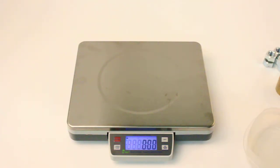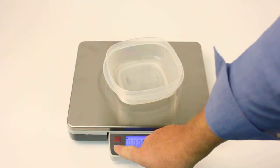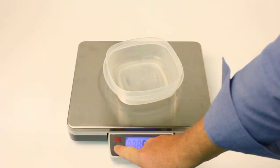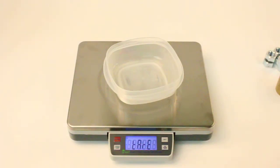To set up the parts counting program, we place an empty container onto the weighing pan, press and hold the tare key until the word tare appears.